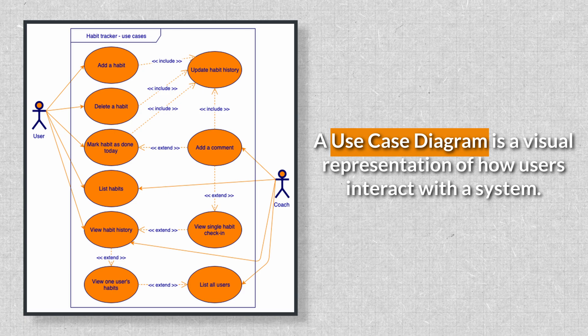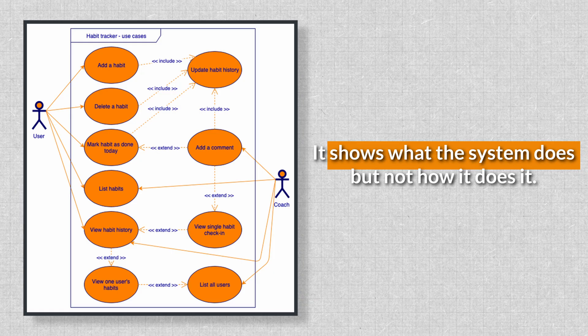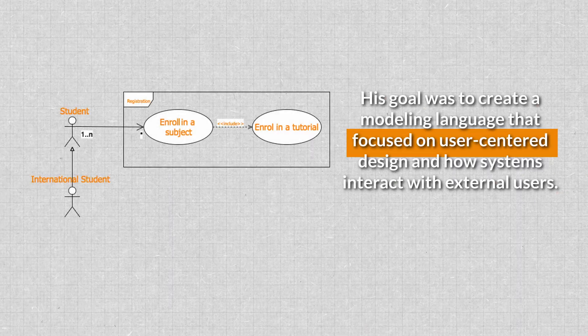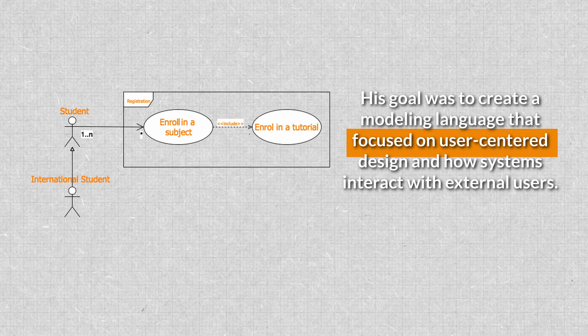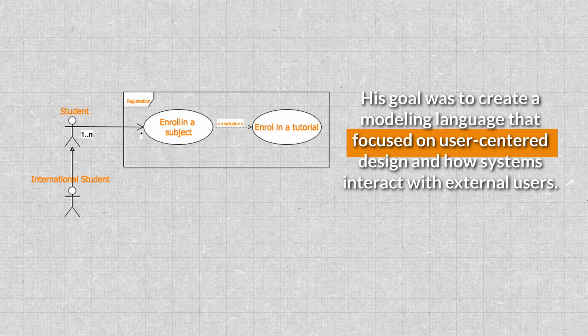I'm Eric with Drawio, and in this video we are breaking down use case diagrams and showing you how to use them to streamline communication on your projects. A use case diagram is a visual representation of how users interact with the system. It shows what the system does, but not how it does it. Jacobsen, a Swedish computer scientist, is credited with formalizing the concept of use case diagrams while working at Ericsson in the 1980s. His goal was to create a modeling language focused on user-centered design and how systems interact with external users. Think of a use case diagram as a layout for how your system is going to work in the real world without having to add all the technical details.